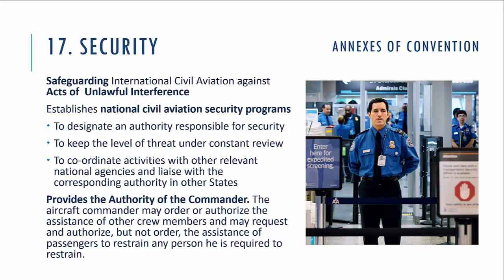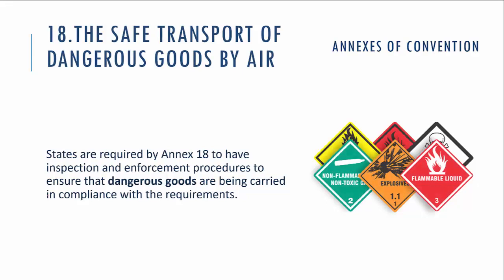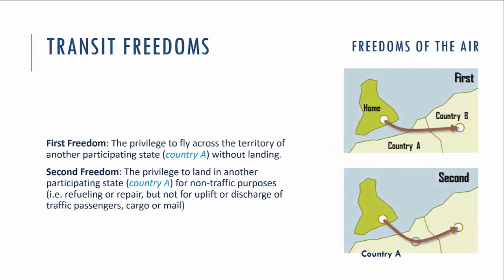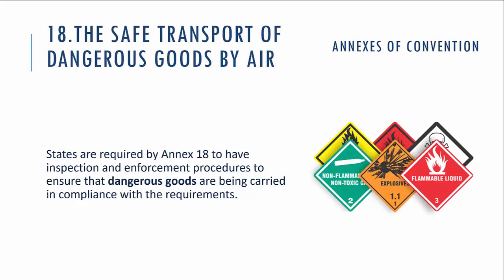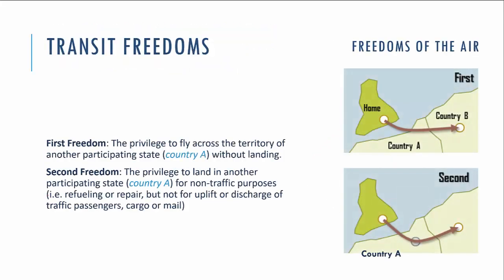Annex 17 also provides authority to the aircraft commander: the pilot in command may order or authorize the assistance of other crew members, and may request — but not order — the assistance of passengers to restrain any person who needs to be restrained. Annex 18 covers the safe transport of dangerous goods by air. It is about having inspection and enforcement procedures to ensure that dangerous goods are carried in compliance with the requirements on international flights.